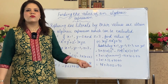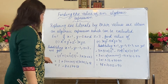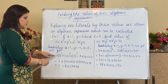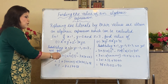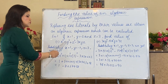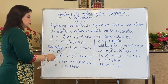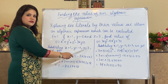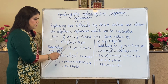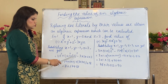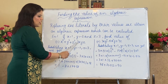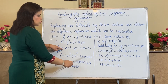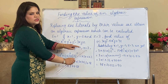So substituting: x³ becomes 1³ because x is 1. y³ becomes (-2)³ because y is -2. z³ becomes 3³ because z is 3. And the last term -3xyz becomes -3 × 1 × (-2) × 3. This is how we substitute all three variable values simultaneously into the algebraic expression.